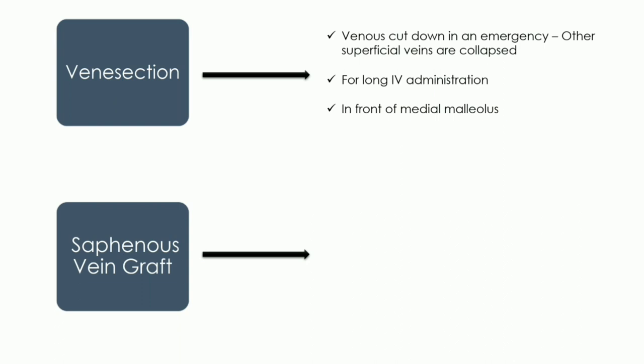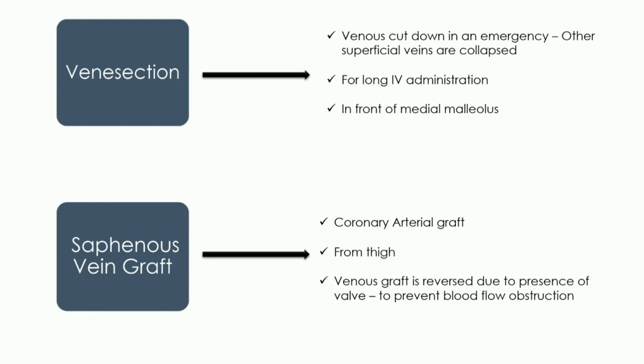Next is the subvenous vein graft. Suppose we are doing a coronary artery bypass surgery — we can choose the subvenous vein as a graft, usually taken from the thigh. Since these veins have valves, we must ensure the vein is inserted in the reverse manner. If inserted normally, the valves would block blood flow. So when using the subvenous vein as a graft, it must be inserted in reverse so that the valves do not obstruct the blood flow.